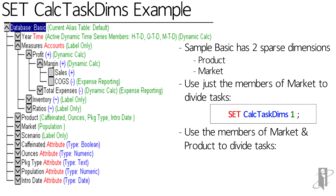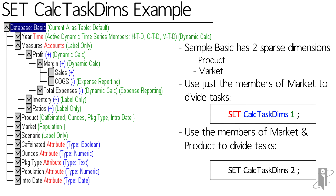But I could calculate market and product at the same time. All I have to do is say SetCalcTaskDims 2, and then it's going to use the combination of members from product and market. So yes, it's going to have to do total market, but it can do total market Cola while it does total market Fruit Soda while it does total market Un-Cola. The only time it's ever going to have to go down to a single CPU is when it has to aggregate up to total market total product.